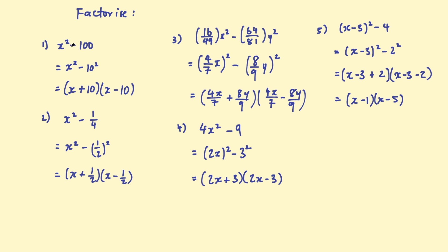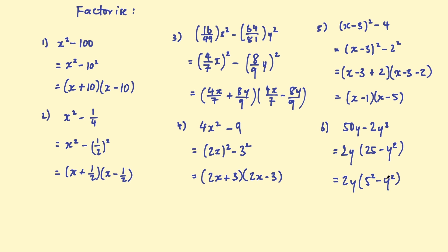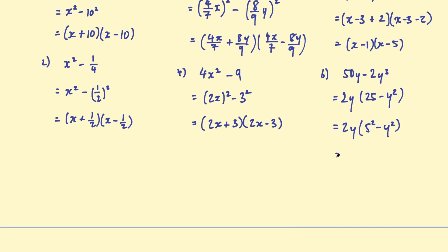Hopefully you're getting the idea that we can have pretty much anything squared — an expression, a number, fractions. It all works with the difference of two squares. For example, you might have 50y take 2y cubed. Here we don't have anything squared yet, so you need to take a step first. You need to notice you can factorize 2y out, leaving 25 take y squared in the brackets. Then in those brackets you have the difference of two squares: 2y multiplied by (5 squared take y squared). Factorizing that: 2y(5 + y)(5 − y).